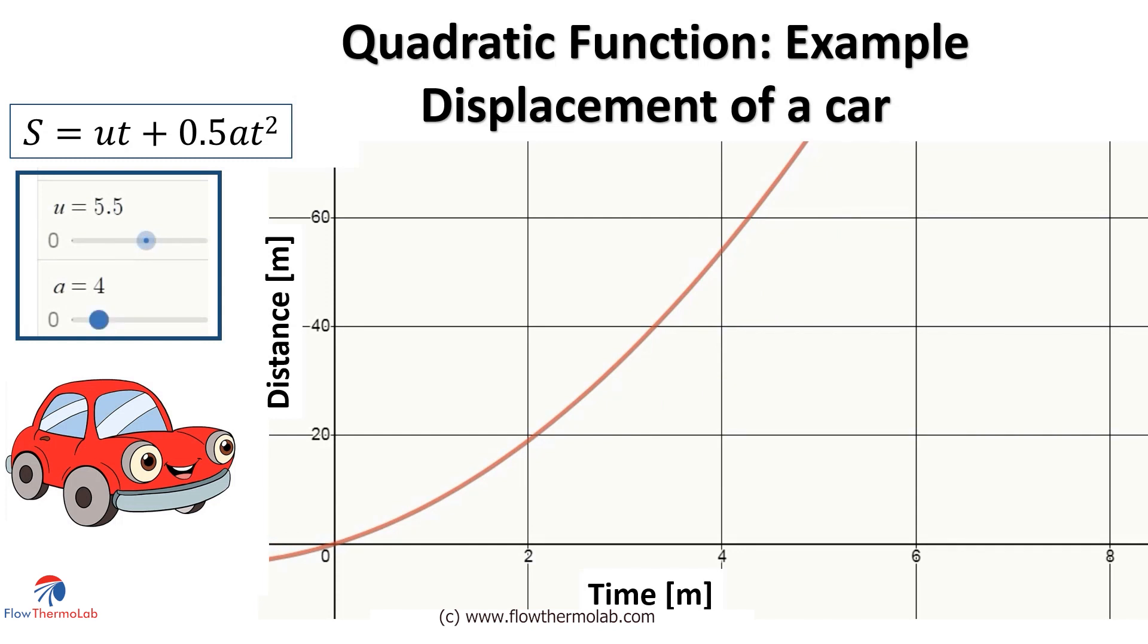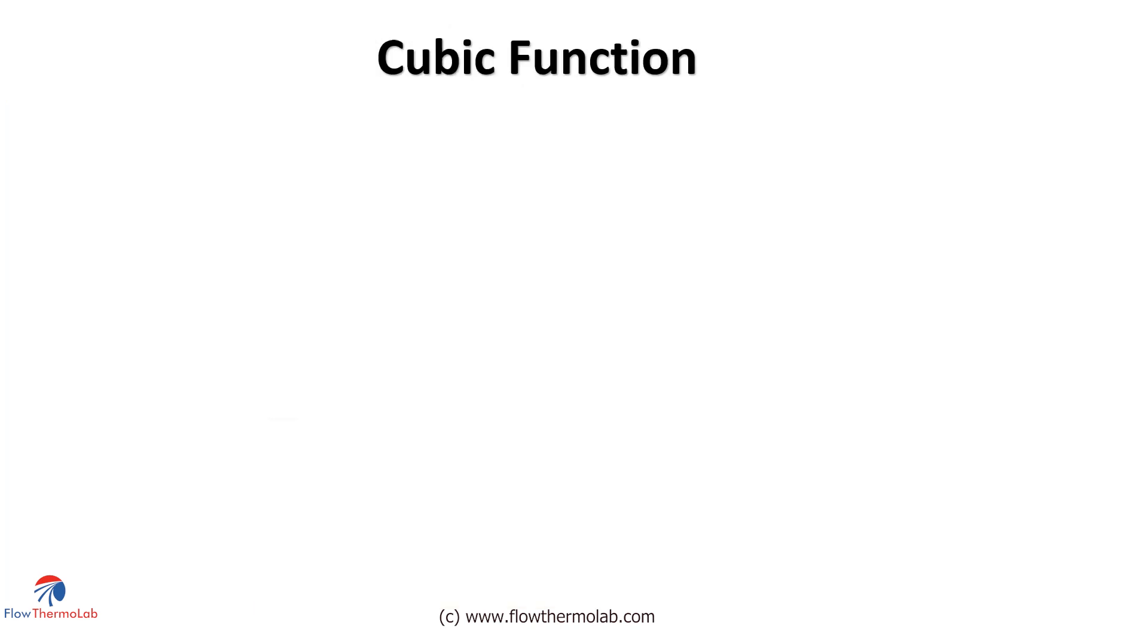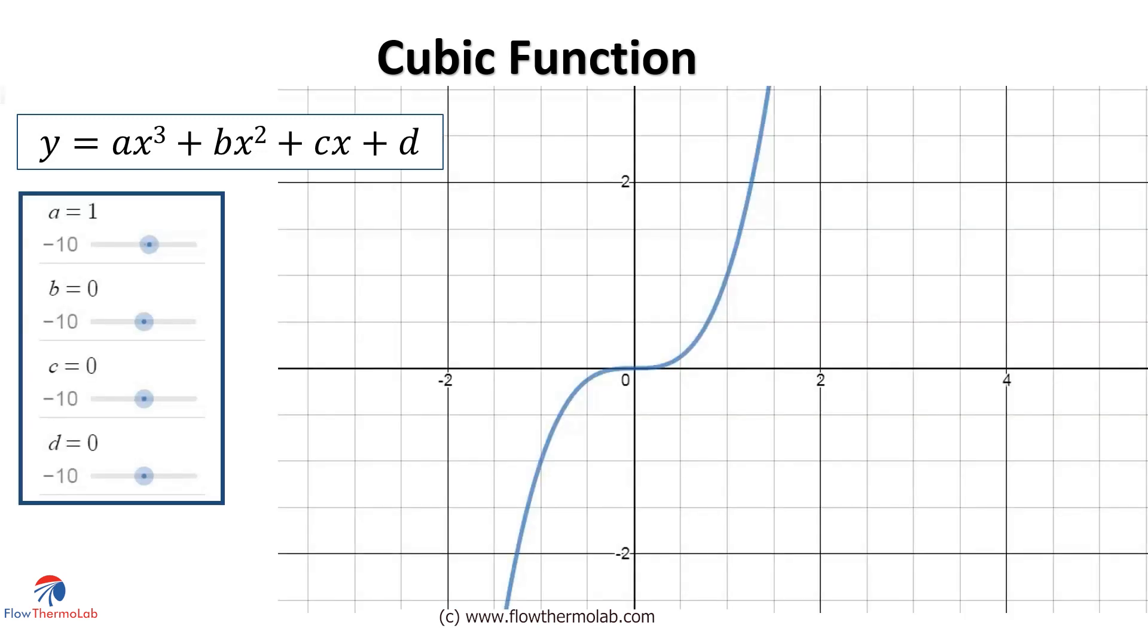The next function is the cubic function: y equal to ax cube plus bx square plus cx plus d. So here we have four constants. The curve is like an s shape. If we vary the values of these constants, we can get different combinations of this s shape. With larger b value, the two inflection points, the maxima and the minima, is more evident. See the different possibilities of the curve when we vary the constants a, b, c and d.